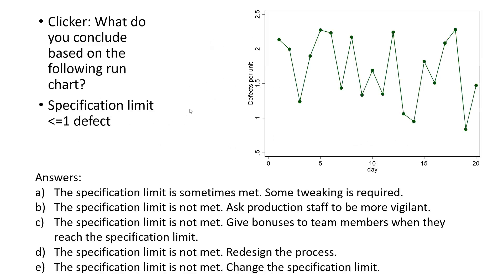Here's an example where we have a series of measurements over time. We have a specification limit — we have to be less than one defect. You can see the limit is here, and we're trying to be below this line.